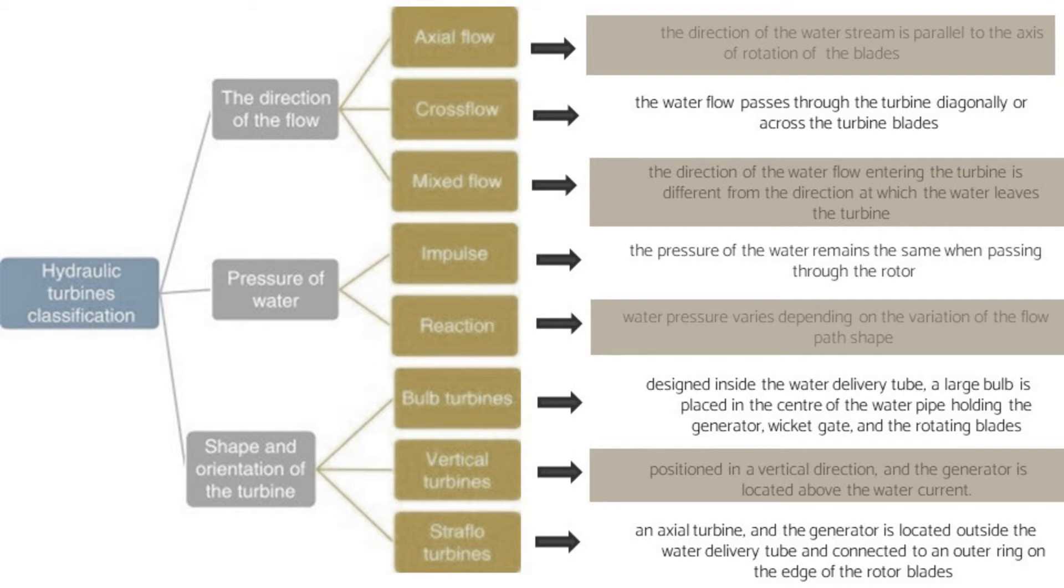For the direction of the flow, we have three groups: axial flow, cross flow, and mixed flow. For axial flow, the direction of the water stream is parallel to the axis of rotation of the blades. For cross flow, the water flow passes through the turbine diagonally or across the turbine blades. For mixed flow, the direction of water flow entering the turbine is different from the direction at which the water leaves the turbine.